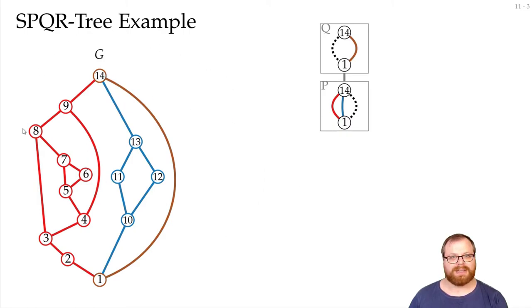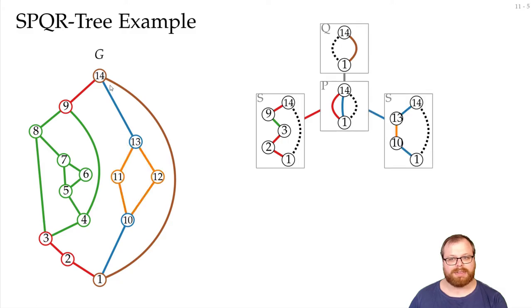Let's have a look at the red component first. Here, we have cut vertices, so we must have an S node. And in an S node, we want to have a path of cut vertices. So, if we start from here, we get to the 2, we get to the 3, then we get a larger component, get to the 9, and then to the 14. On the right side, we also have cut vertices. So, we have a path from 1 to 10, then the component from 10 to 13, and then 13 to 14.